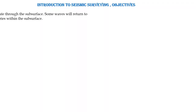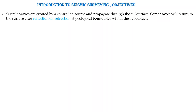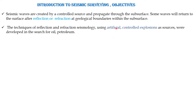What are the different kinds of seismic survey and its objectives? Seismic waves are generally a controlled source method and propagate through the subsurface, and there will be reflection and refraction at the geological boundaries within the subsurface. The techniques of seismic reflection and refraction seismology use artificial and controlled explosions; they were developed in search of oil and petroleum. Energy pulses are reflected from the subsurface and recorded at near normal incidence, and we can measure travel times that can be converted into estimates of depth to the interface.